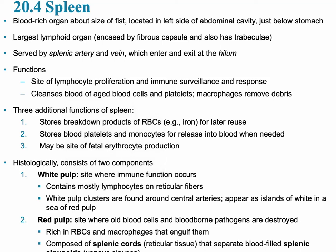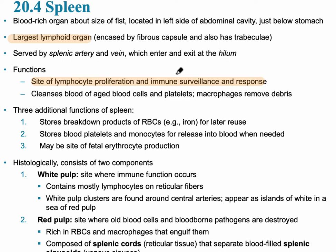The spleen is a very blood-rich organ, about the size of your fist, located in the left side of your abdominal cavity just below the stomach. The spleen is the largest lymphoid organ that we have. It's encased by a fibrous capsule and trabeculae, similar to the lymph node. Its main functions are that it's a site for the growth of lymphocytes — lymphocyte proliferation — and also immune surveillance and response.